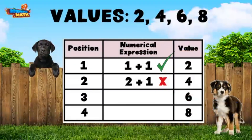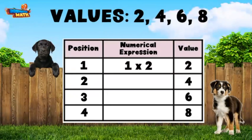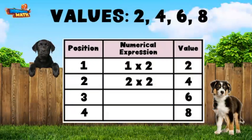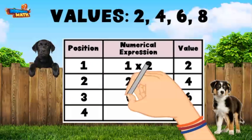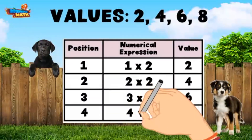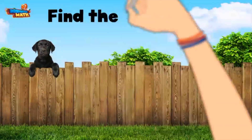If we add one, then in our next position the rule does not work — two plus one does not equal four. Let's try times two: one times two is two, two times two is four, three times two is six, and four times two is eight. We have found the rule, which is to multiply by two.